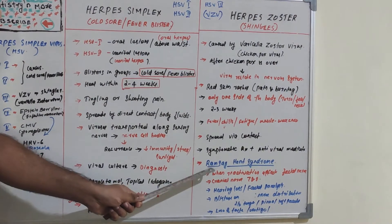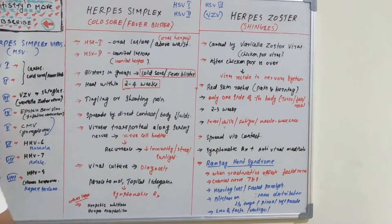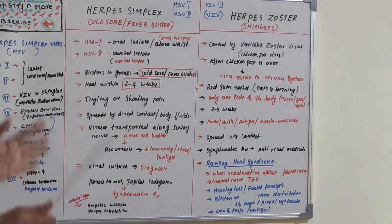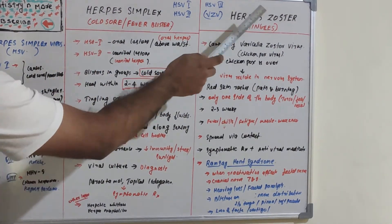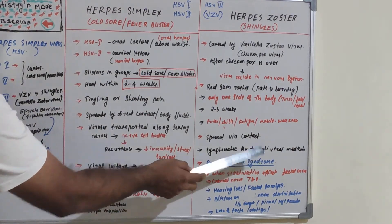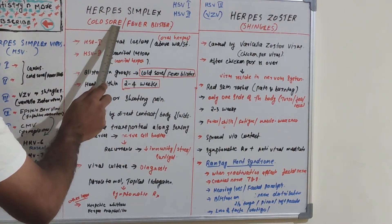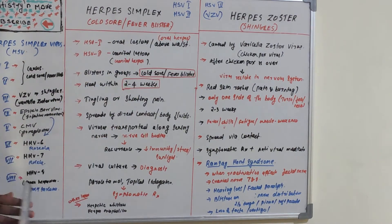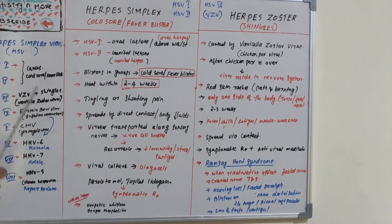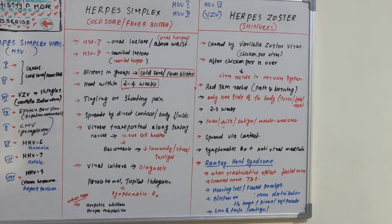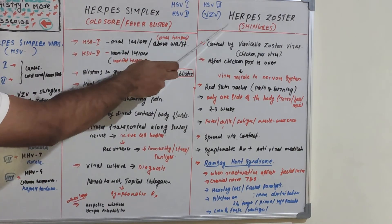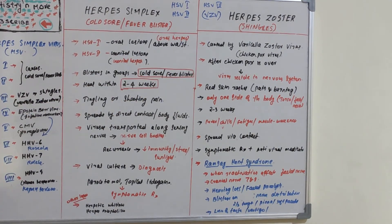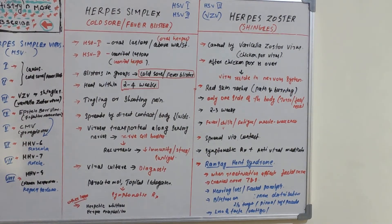Ramsay-Hunt syndrome, or simply Hunt syndrome, is a very important topic. So we have learned three key topics: herpes simplex, herpes zoster, and Ramsay-Hunt syndrome. Questions may come as cold sore, fever blister, or shingles. The common virus is herpes simplex virus — categories 1 and 2 cause herpes simplex, and category 3 causes herpes zoster. I hope you understood this well. I will come up with a new session on dentistry and more. Thank you.